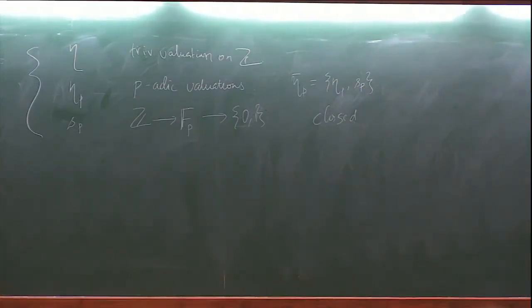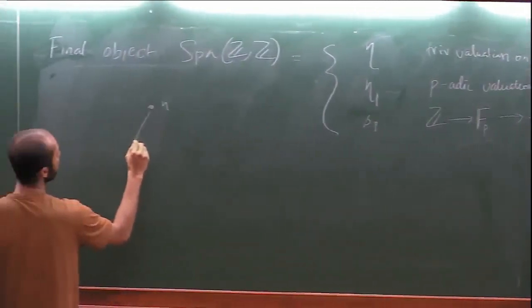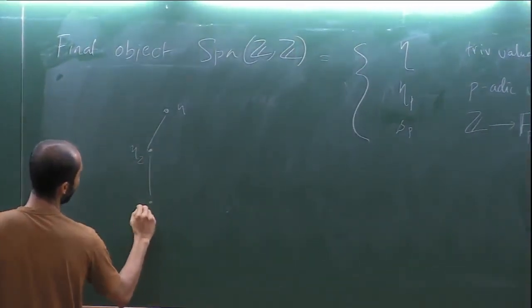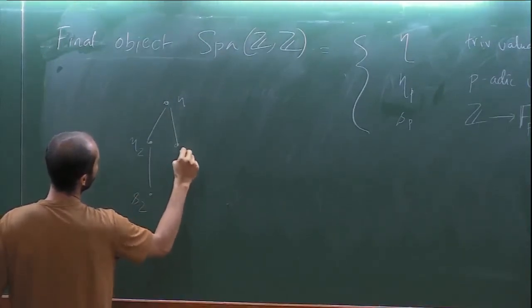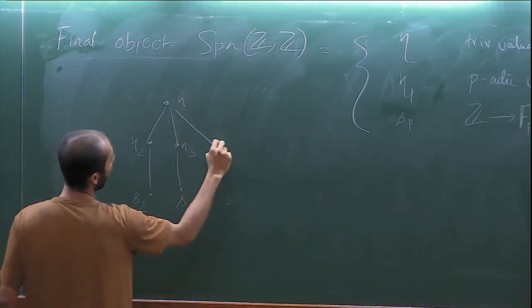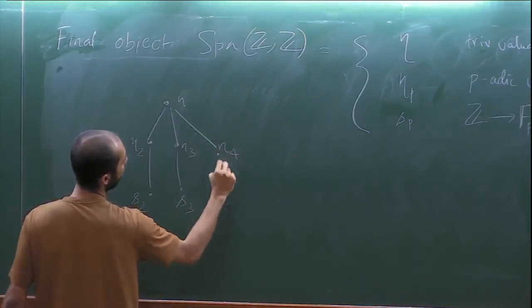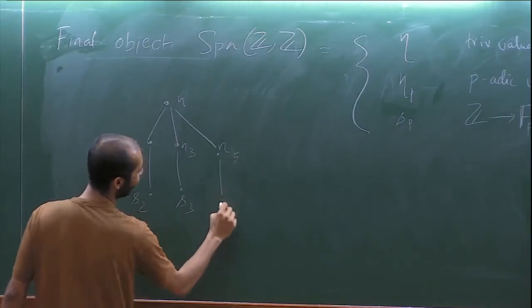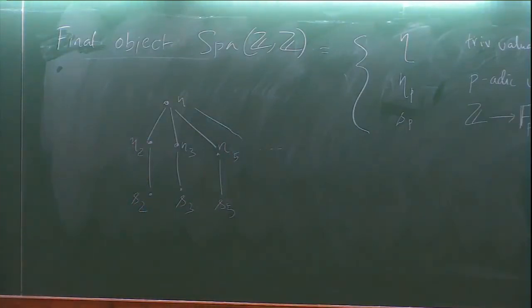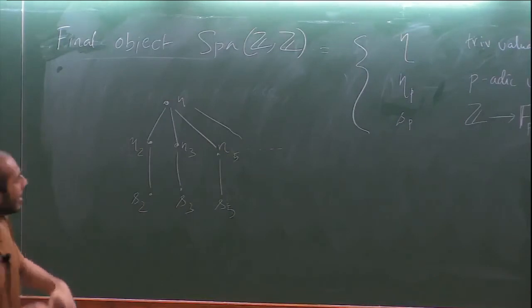The closure of η_p is {η_p, s_p}. There is a nice picture: we have η at the top, then for each prime p we have η_p with s_p below it. To see the closure of a point, you look at the subtree below it. The trivial valuation takes everything non-zero to 1 and zero to 0.